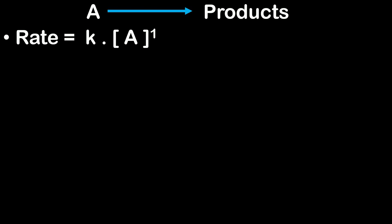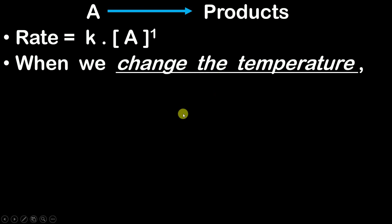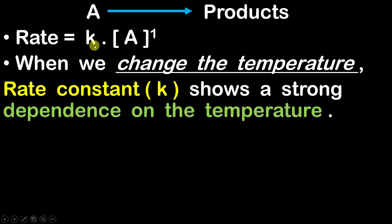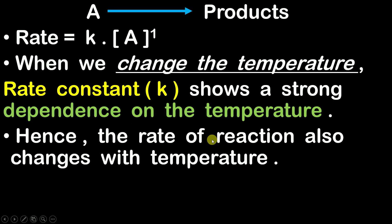Now, when we change the temperature, what happens is that the molar concentration of A is going to change only slightly. There is no significant change observed in the concentration of reactants as we change the temperature. But the rate constant K shows a strong dependence on temperature, meaning the change observed in K as we change the temperature is significant. Therefore, the rate of the reaction also changes with temperature.